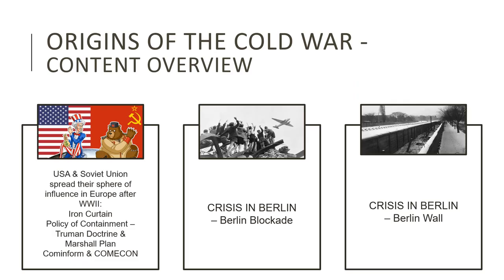Question 1 on the NSC History Paper 1 exam focuses on the origins of the Cold War. When preparing for this section, you need to know how America and the Soviet Union attempted to spread their influence in Europe after World War II. This will include the Iron Curtain, the Policy of Containment, the Truman Doctrine and Marshall Plan, and Cominform and Comecon. You must also study the Berlin Crises with specific focus on the Berlin Blockade and the Berlin Wall. In accordance with the Grade 12 CAPS document and examination guidelines, the examiner can focus on any of these aspects, so it is very important that you study all of it.